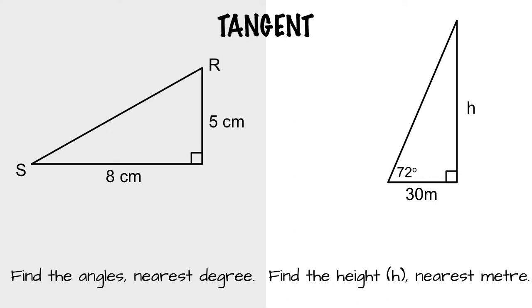And now we'll go through three examples using tangent, sine, and cosine, finding an angle and finding a length. So on the first side, we're going to find both angles to the nearest degree. You can go from S or from R. I'm going to choose to go from S.